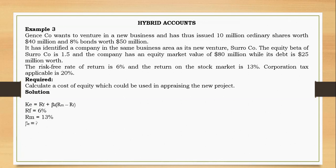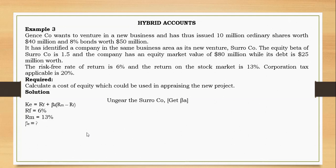For the CAPM formula we have the risk-free rate of 6 percent and the market return of 13 percent. We need the equity beta, but no equity beta for Jane's company is given directly. The equity beta given is for Suro Company — it contains Suro's business risk (same as Jane's new venture) plus Suro's own financial risk. So we remove the financial risk from Suro's equity beta to obtain the asset beta, then regear it using Jane's capital structure.